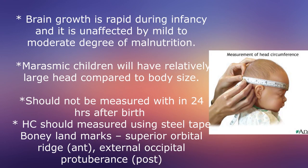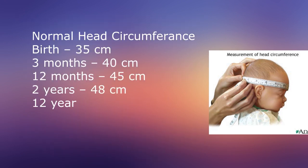Head Circumference. Brain growth is rapid during infancy and is unaffected by mild to moderate malnutrition. Marasmic children will have a relatively large head compared to body size. It should not be measured within 24 hours after birth, and should be measured using a steel tape. Bony landmarks: anterior – superior orbital ridge; posterior – external occipital protuberance. Normal values: birth 35 cm, 3 months 40 cm, 12 months 45 cm, 2 years 48 cm, 12 years 52 cm.